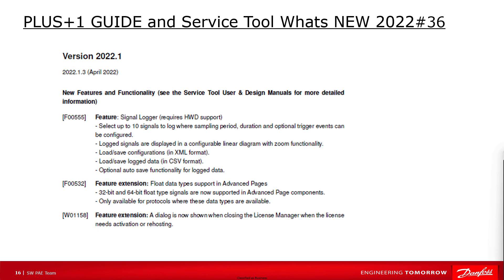Within the Plus One service tool version 2022.1, we have moved the evaluation status functions to the release function, even if we don't have released hardware or HWD available. That includes the signal locker and the support of 32 and 64-bit float data types. These features have been added to the service tool to support future HWD and protocols. Another extension took place in the license manager, similar to the dialogue added inside the guide tool, to help the user be informed about the required licensing process.